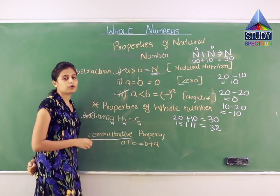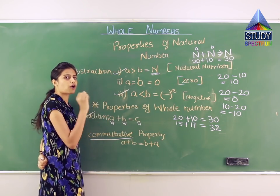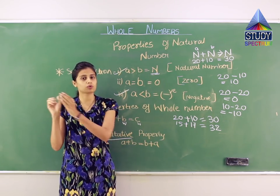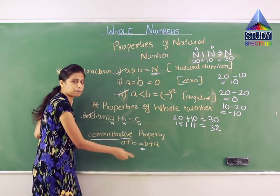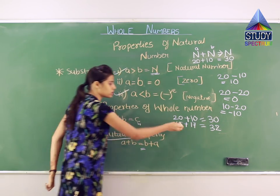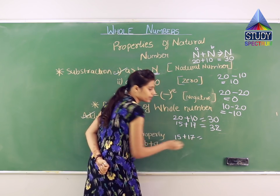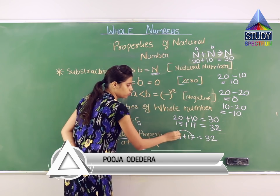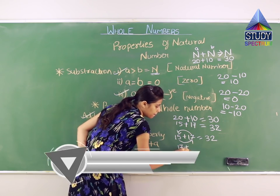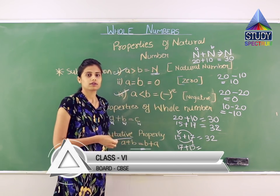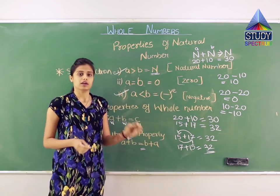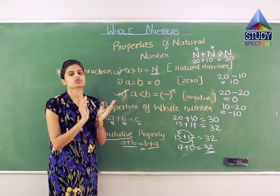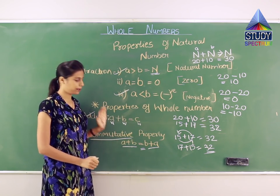The next property is the commutative property of addition. The format is: A plus B equals B plus A — meaning the sequence does not matter. For example, 15 plus 17 equals 32, and 17 plus 15 also equals 32. So if A and B are whole numbers, A plus B equals B plus A. We are now clear with the addition property and the commutative property.